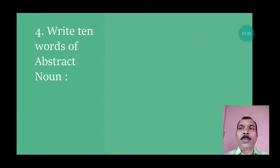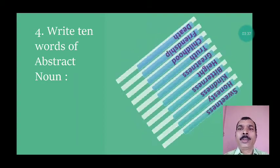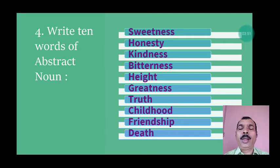Number 4: Write 10 words of abstract noun. Ten words of abstract noun are: sweetness, honesty, kindness, bitterness, height, greatness, truth, childhood, friendship, death.